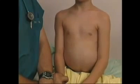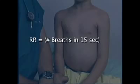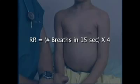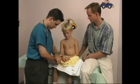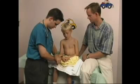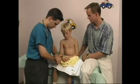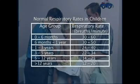A reasonable approach to taking the respiratory rate is the number of breaths in 15 seconds multiplied by 4. In order to draw the child's attention away from breathing, you may palpate the radial pulse. Determine the respiratory rate and compare it with the normal values for the appropriate age group.